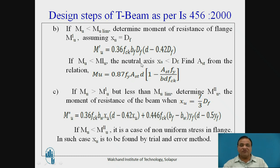D minus 0.42 DF is lever arm and this is compression C. So if MU is less than MU limit, the neutral axis XU is less than DF. So find area of steel AST from the relation MU is equal to 0.87 FY AST D into 1 minus AST FY divided by BD FCK. So this is G.1.1 B equation.